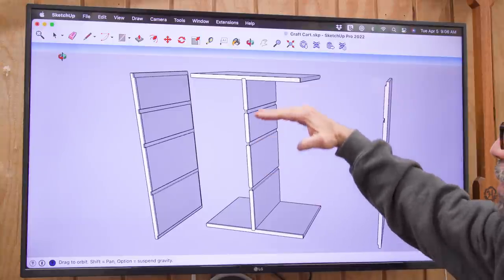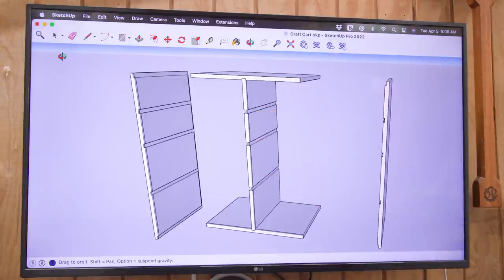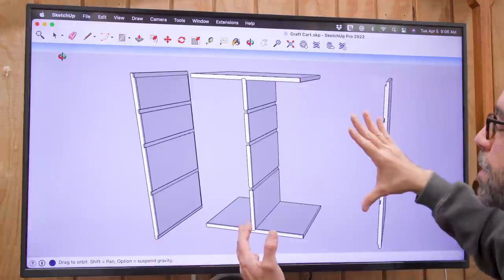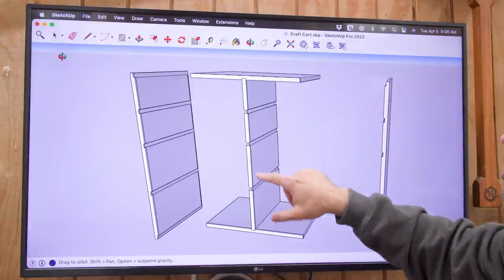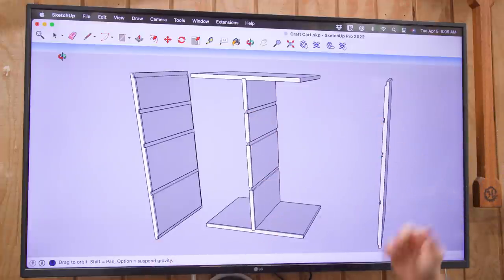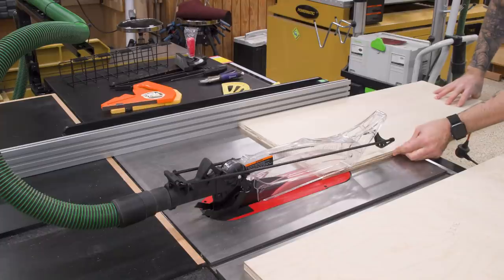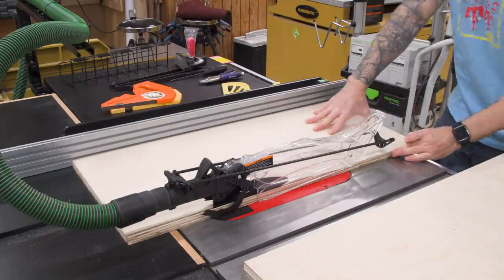But when it comes to the shelves inside here, too many variables at this point to call that number. So what I'm going to do is make sure we get everything else cut, get all those joints cut, then we can dry assemble, bring it together and then take the measurement from the project itself. That's something we call relative dimensioning. So now I'll cut my sides, top, bottom and center divider to length and width.